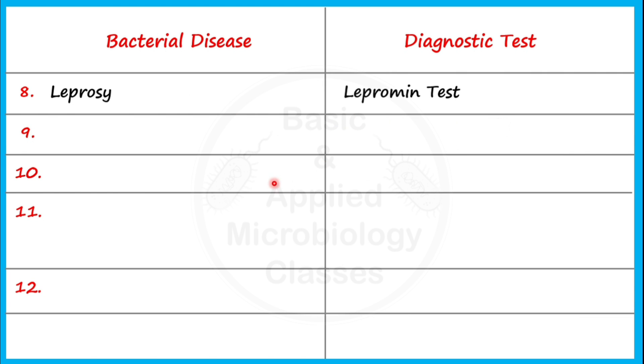Let's see the next disease: typhus. Typhus is a kind of rickettsial infection caused by Rickettsia species. For detection of typhus we perform the Weil-Felix test.